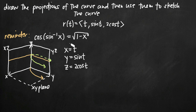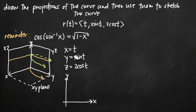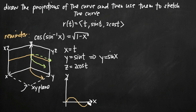When drawing the projection on the xy coordinate plane, we draw a two-dimensional coordinate plane with x and y. We need an equation for y in terms of x. We have y equals sine t, and since x equals t, we substitute x in for t to get y equals sine of x. Now we have an equation we can graph on the xy plane. Graphing y equals sine of x, we get a sine curve where this point is 2pi and this point is pi.